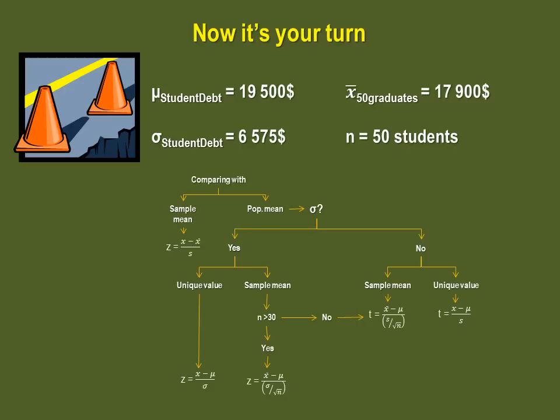Take a look at the flowchart here, pause the video and try to find which statistic you are going to use. This is the correct answer. So, you are looking for the z-score, but the version divided by the standard error.